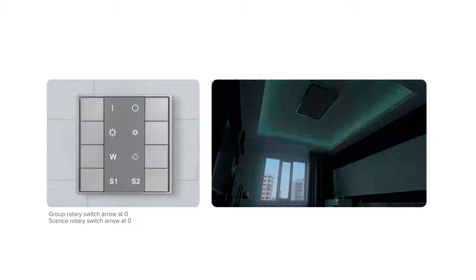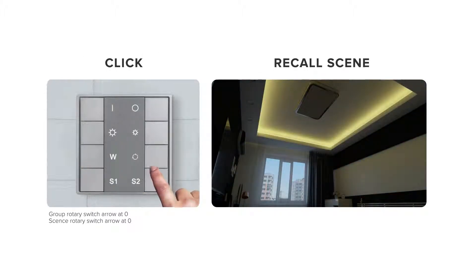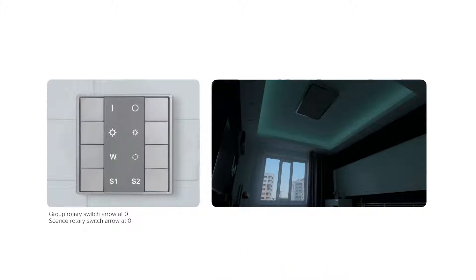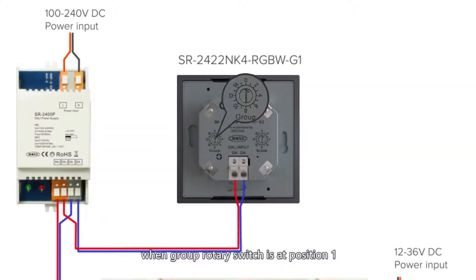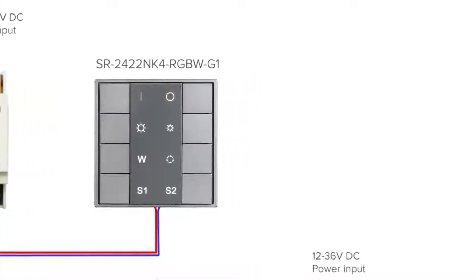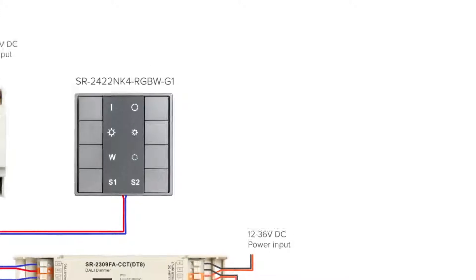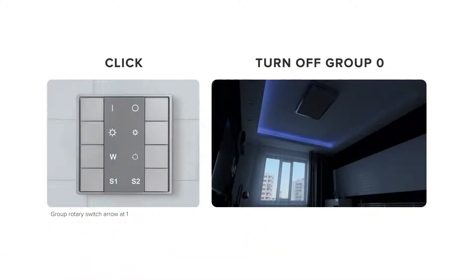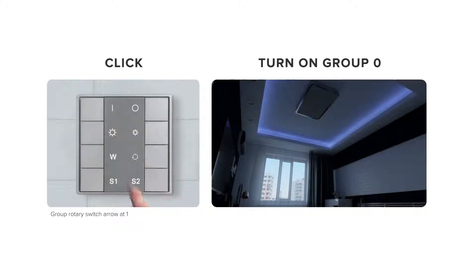Press and hold down to save scene to selected group. Click S1 to recall the scene just saved. When the Group Rotary Switch is at position 1, the controller controls Dolly Group 0. Click to switch off groups. Click to switch on groups.